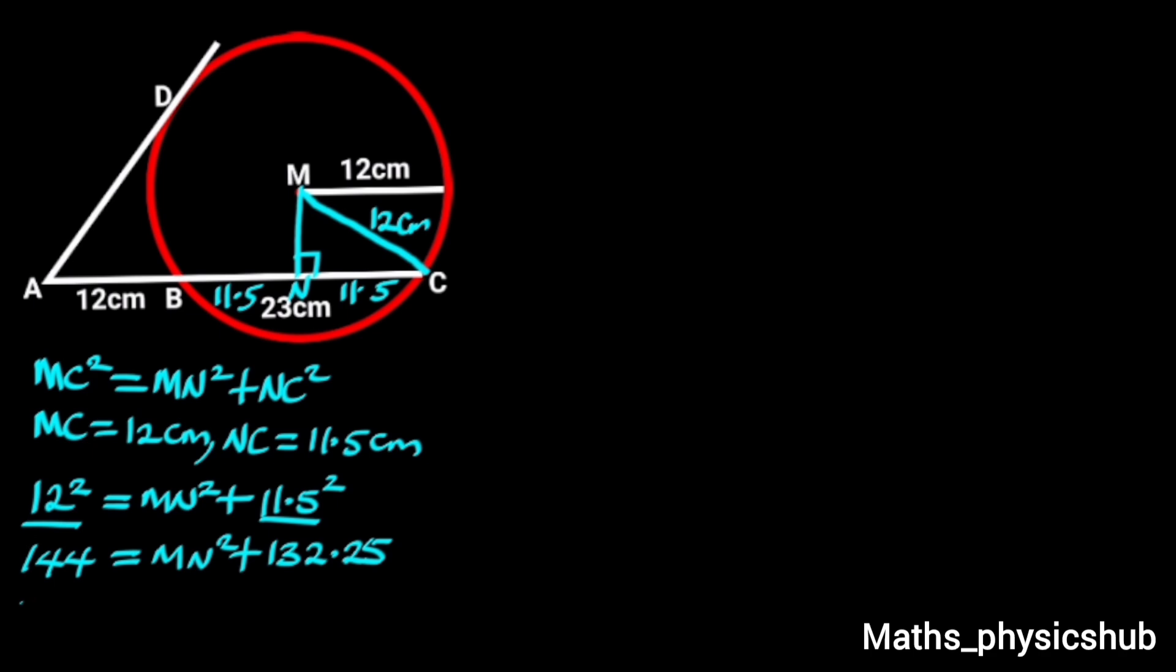To find MN, we take 132.25 to the left side. 132.25 going to the left side will become negative since it is positive. It follows that 144 minus 132.25 is 11.75. So MN square equals 11.75.